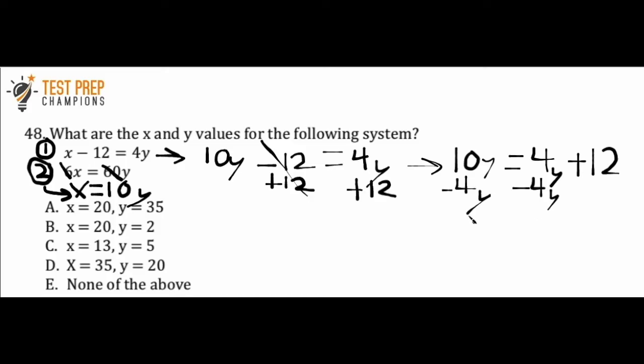But now what I want to do is I want to subtract 4y from both sides of the equation. 4y minus 4y cancels out. 10y minus 4y is going to be 6y. So I now have 6y equals 12.